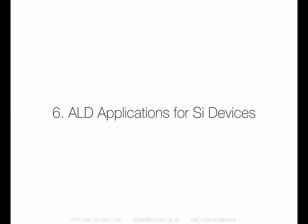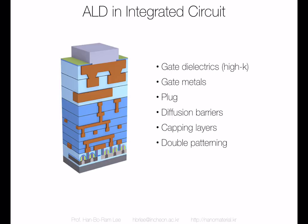Let's start Chapter 6. In this chapter I want to introduce the two big applications of ALD for the silicon industry. I will introduce the high-k material deposited by ALD and then the double patterning process. ALD was developed almost 40 years ago. The first application was electroluminescence devices, but ALD has really high conformality and very nice thickness controllability, so the silicon industry is very interested in ALD.